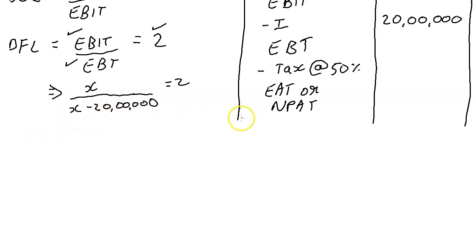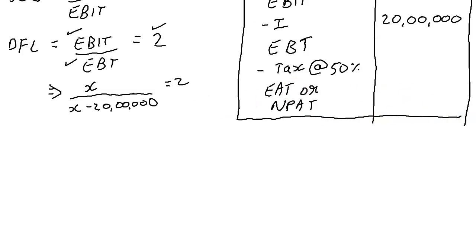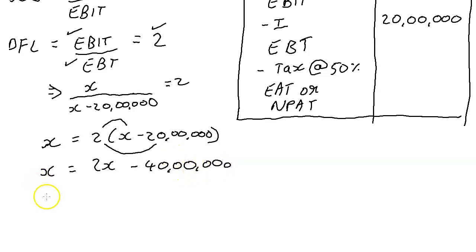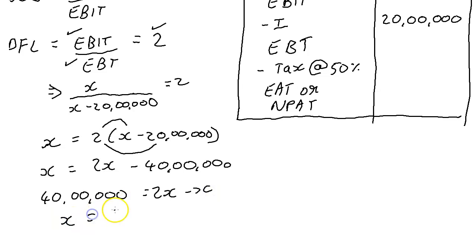Solving the equation: x = 2 × (x − 20 lakhs), which gives x = 2x − 40 lakhs. Rearranging: 40 lakhs = 2x − x, therefore x = 40 lakhs. So EBIT = 40 lakhs.